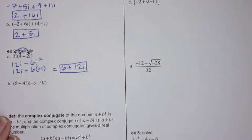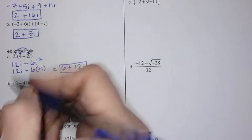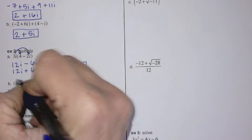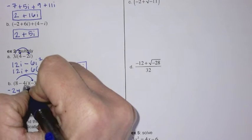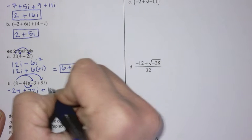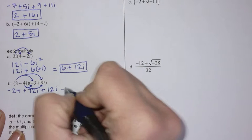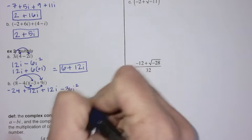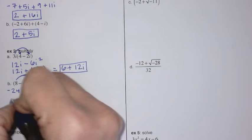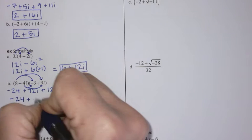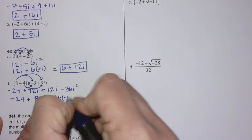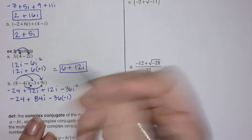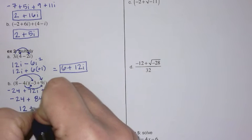For part b, this is a FOIL, so make sure you distribute properly. We get negative 24, then plus 72i, then plus 12i, then minus 36i squared. Combining like terms: i squared can be written as negative 1, so we get negative 24 plus 84i minus 36 times negative 1, which is positive 36. So 36 and negative 24 makes 12, and since that's the real number it goes first, giving us 12 plus 84i.